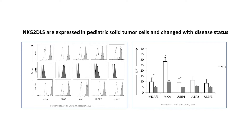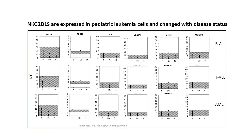Moving on to pediatric solid tumors and leukemia, we observed that these MICA and MICB proteins are expressed in different cell lines, and also in osteosarcoma cells from children with metastasis. We also see different expression levels at different time points — at diagnosis, at leukemia relapse, and in remission. It appears that at diagnosis and relapse, there is a downregulation of these ligands in the blood, which has important implications for immune recognition.